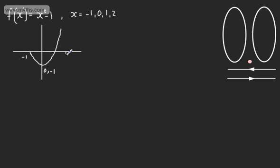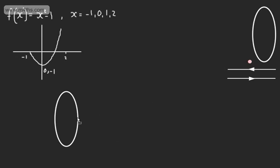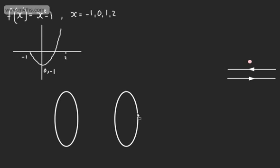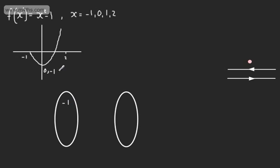Let's look at this as a mapping for these values. If I take minus 1 from the domain and put it through the function, that gives me 1 minus 1 equals 0. Taking 0 gives me 0 minus 1, which is minus 1. Taking 1 gives me 1 minus 1, which is 0. So in the range, we're mapping two different domain values to the same range value — this is simply a many-to-one function, which is perfectly fine.